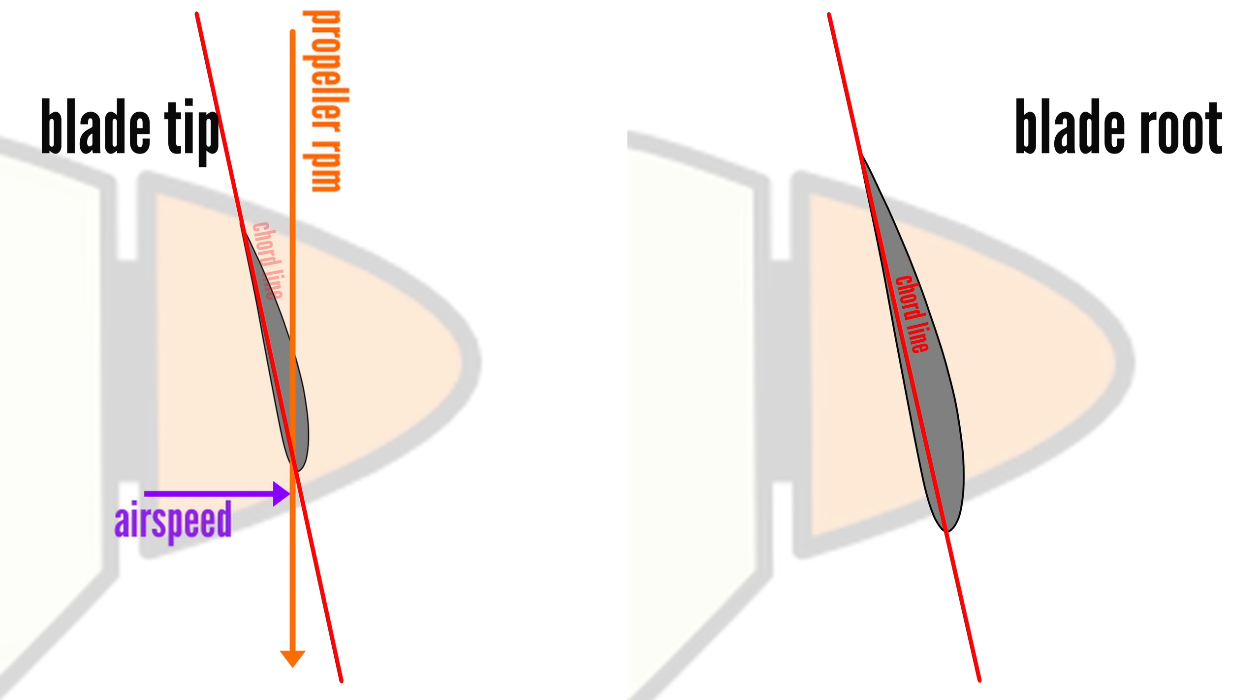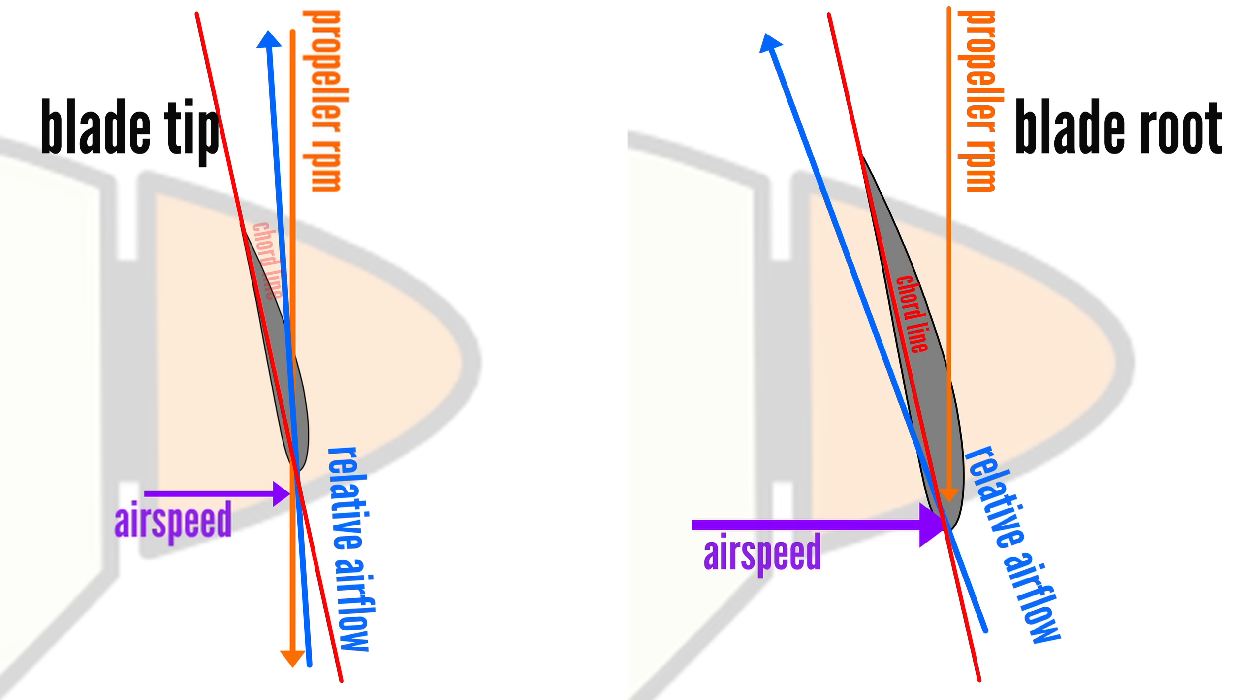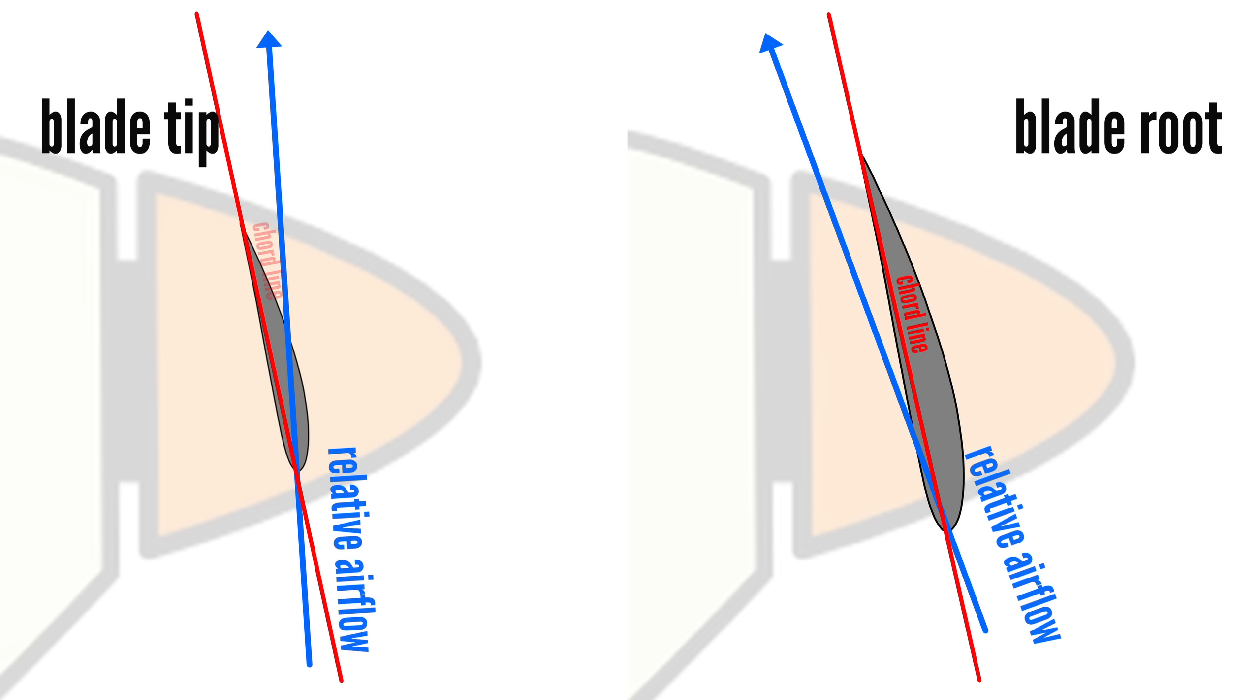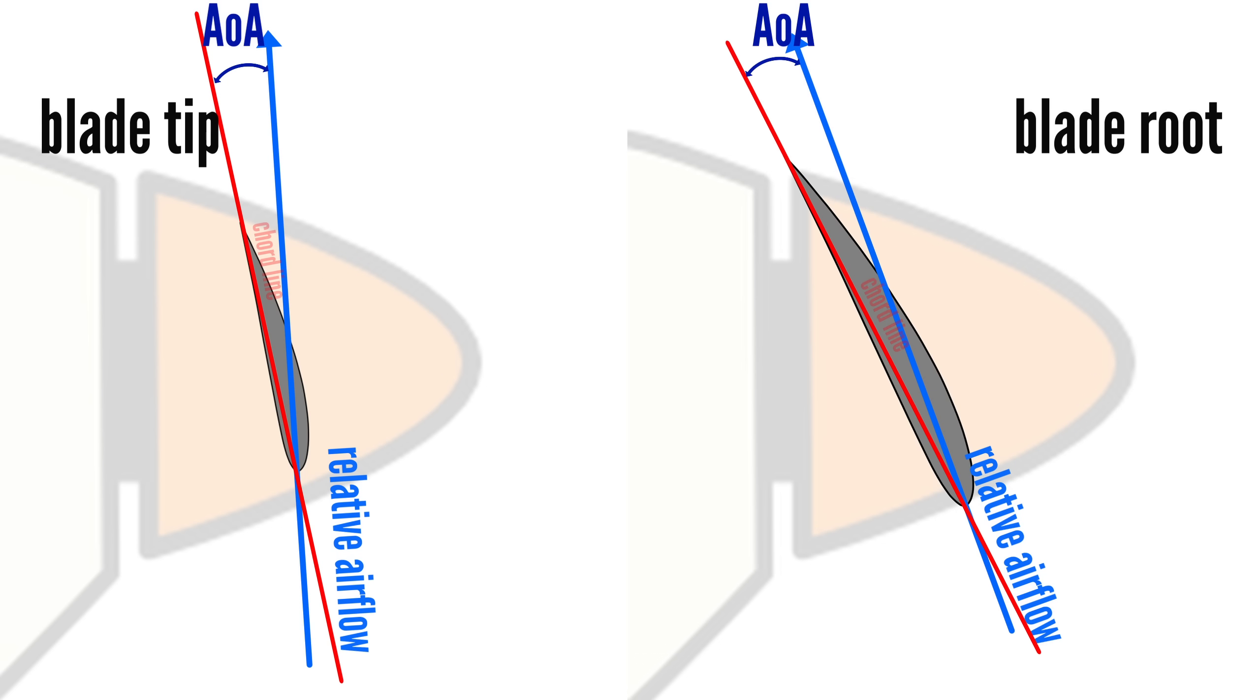This is necessary for all propellers because the tip of the blade spins much faster than the root. In flight, the faster spinning tip travels a greater distance along the propeller's plane of rotation than the distance it travels forward, compared to the blade root, which travels a comparatively greater distance forward than distance along the propeller's plane of rotation. This changes the angle at which certain blade sections cut through the air, with a higher angle of attack at the blade tip than the blade root.